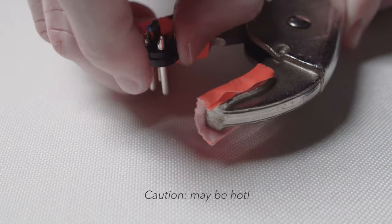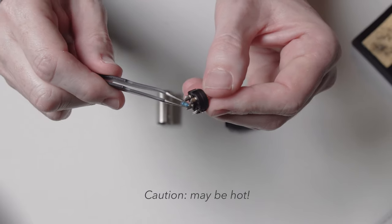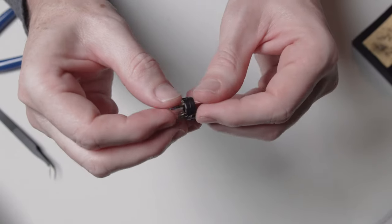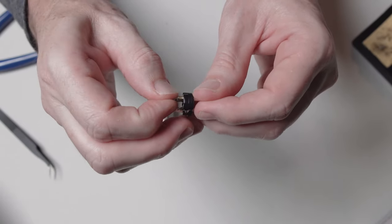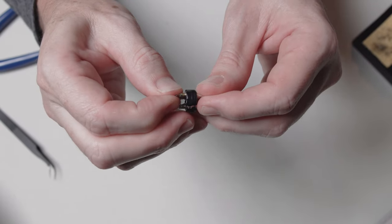And then check your work, grab the resistor, pull on it, make sure it's actually settled into the pin and that it's in the solder enough that it's going to stay there.